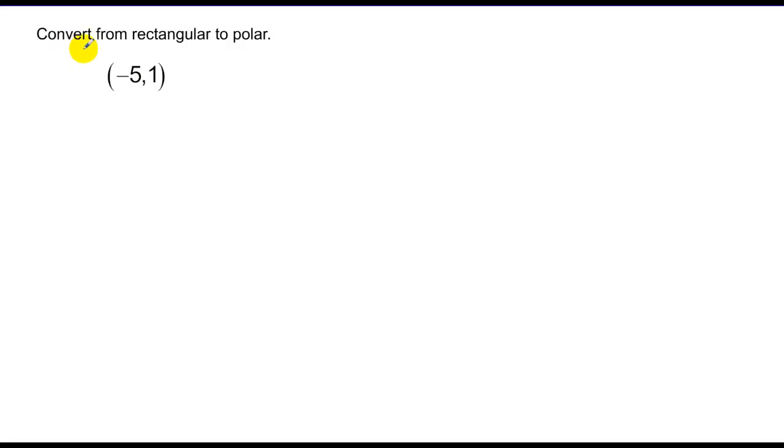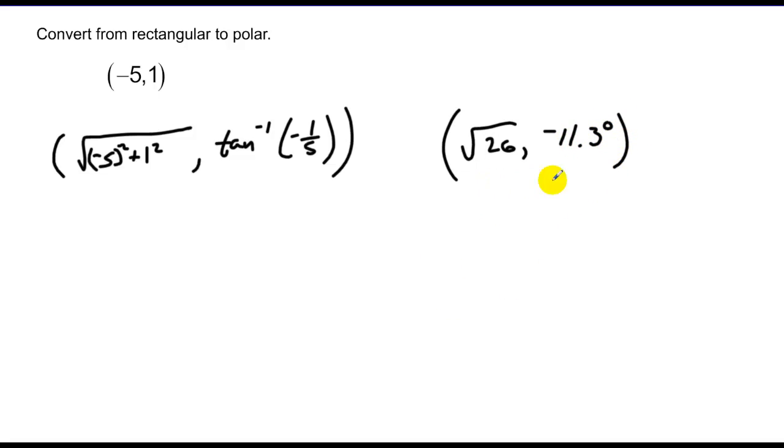Now let's convert (-5, 1) to polar coordinates. So once again I take the square root of negative five squared plus one squared, and inverse tangent of negative one over five. That gives us the square root of 26, and negative 11.3 degrees. Now in this case I've got a little bit of a problem, because when I look at negative five and one, negative five, one puts me somewhere in the second quadrant.